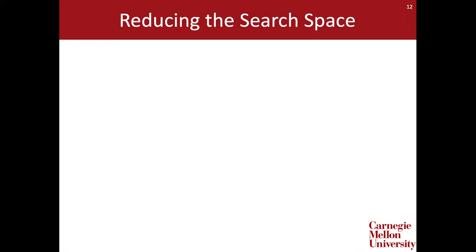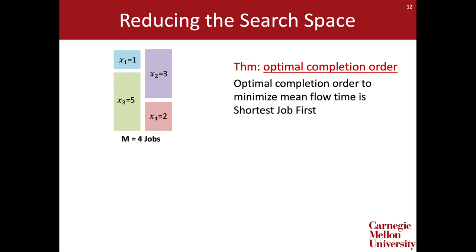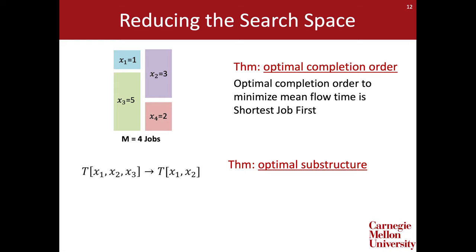We'll attack this problem by reducing the search space for the optimal policy. First, we can show that for any set of jobs, the optimal policy which minimizes mean flow time will complete jobs in shortest job first order. This allows us to consider just one of the m factorial possible optimization problems. To solve this remaining optimization problem, we'll identify some optimal substructure — we'll relate the case of having three jobs in the system to the case of having just two jobs in the system. We'll call this optimal substructure the scale-free property.